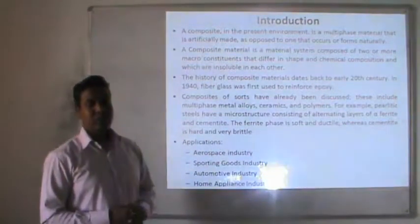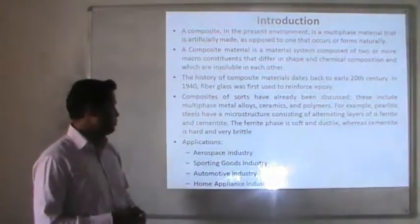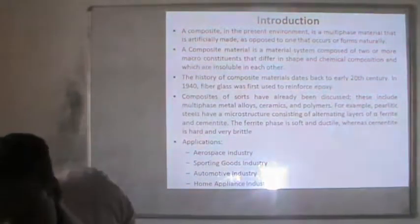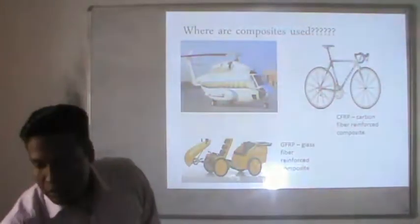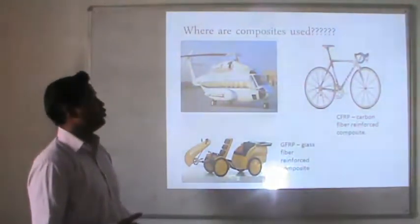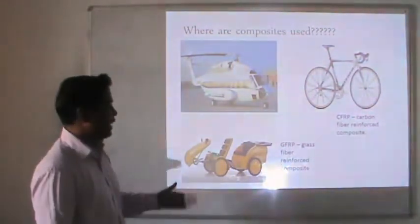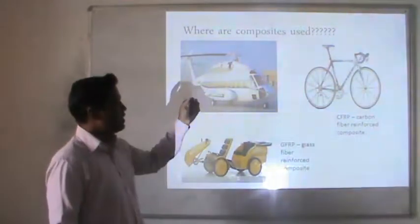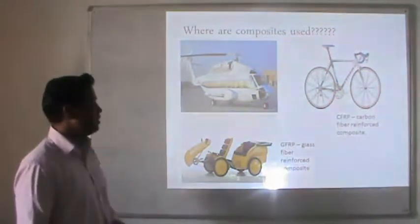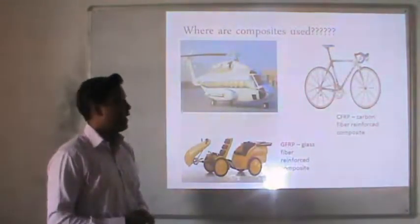The ferrite phase is soft and ductile, whereas the cementite is hard and very brittle. Applications of composite materials span various fields including aerospace industries, sporting goods industries, automotive industries, and home appliances. Two types are carbon fiber reinforced composite and glass fiber reinforced composite. Carbon fiber reinforced composite is used in aerospace tires and vehicle tires, while glass fiber reinforced composite is used in automobile bodies.